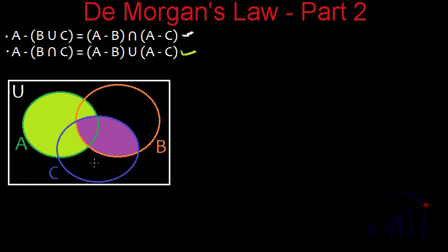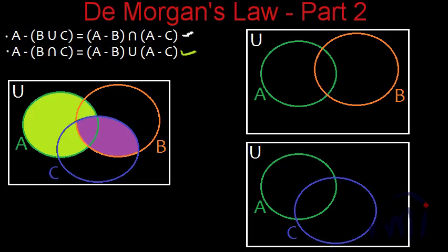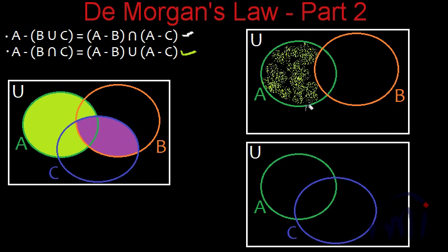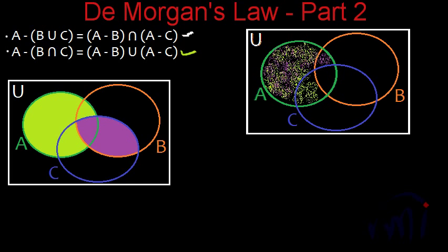For the right hand side, I am going to draw two more Venn diagrams. In the first, A minus B is represented by the area of A which is not overlapping with B. A minus C is the area of A not overlapping with set C. To find their union, I overlap these two drawings. The area where you find either green dots, purple dots, or both represents A minus B union A minus C.